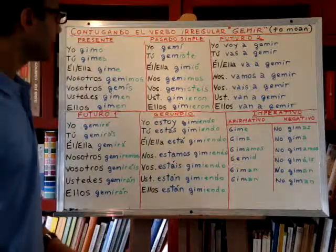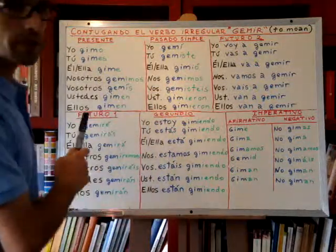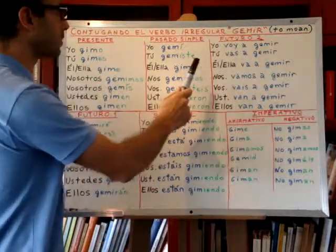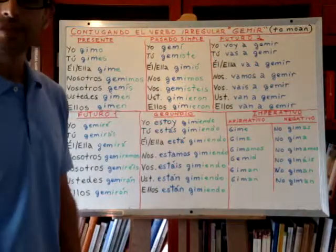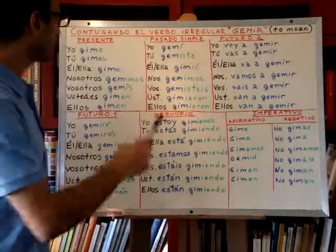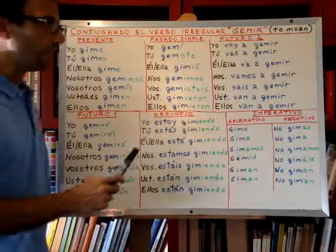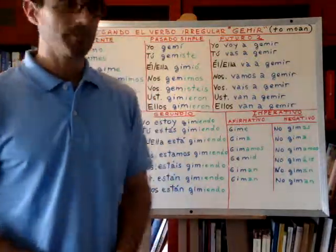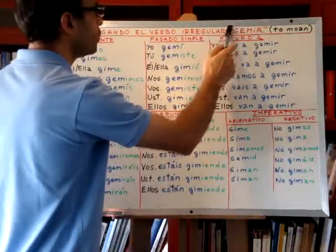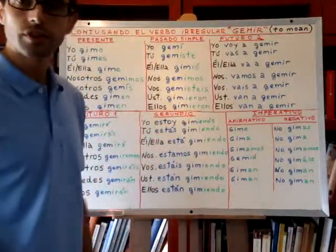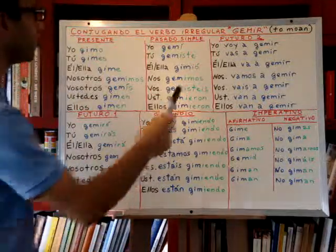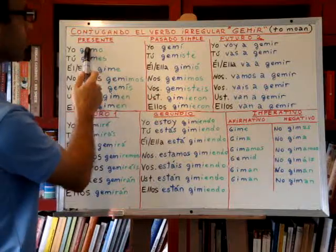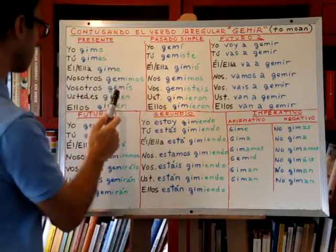You will see that this verb presents an irregularity in the present tense and also in the simple past. Van a ver que este verbo es irregular en el presente y en el pasado simple. Why is it irregular? We have said that if the root of the verb changes, then that is an irregularity. You can see how the root that is gem here changes to gim — G-I-M.